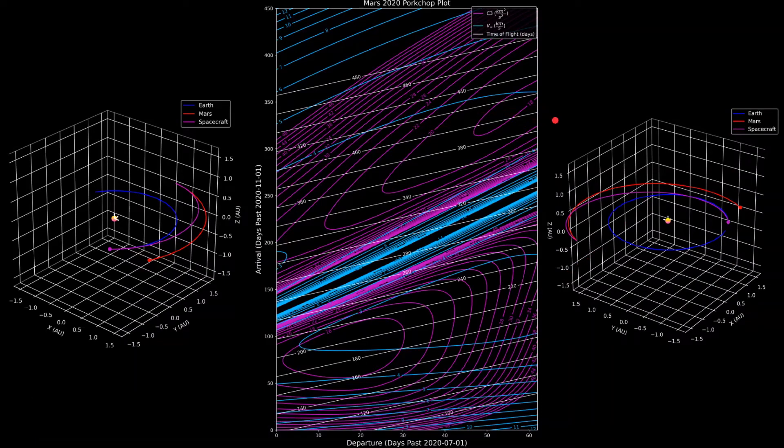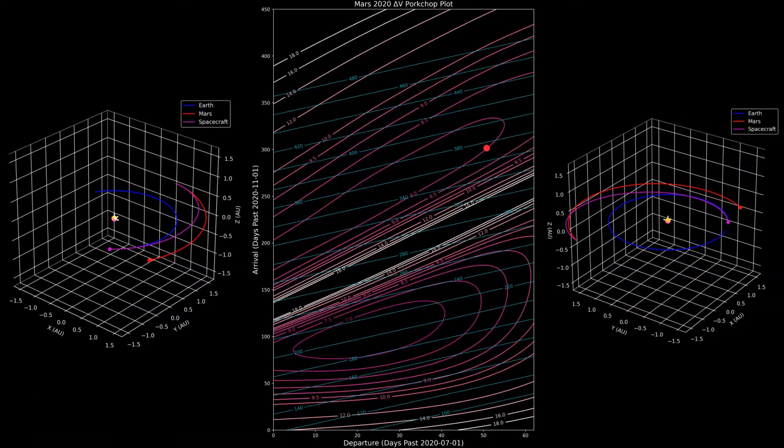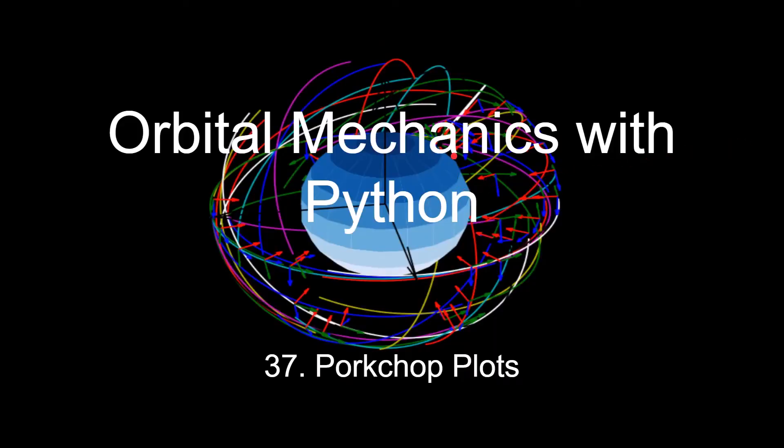Now both of these types of pork chop plots are used, but I find that this one, the one with only delta V, is a little bit cleaner and easier to read. So this is the 37th video in the series, and this one I'm going to be going over pork chop plots.